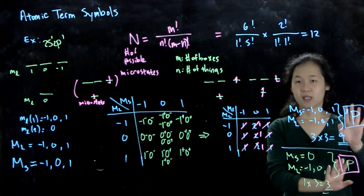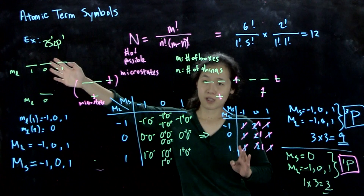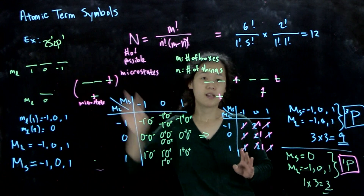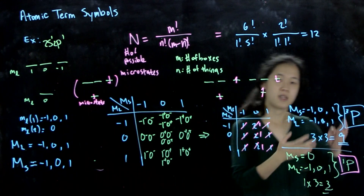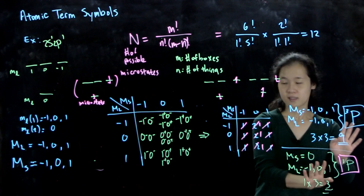So the s¹p¹ atomic configuration has two possible terms at two different energy levels: a triplet P term and a singlet P term. They differ in energy because electron-electron repulsion results in different energies for these two states.